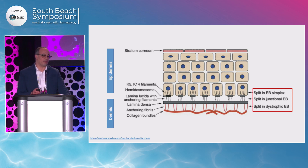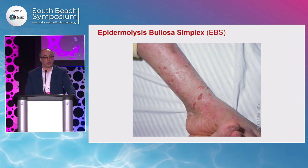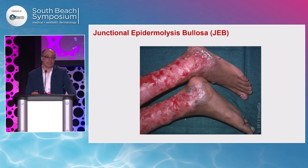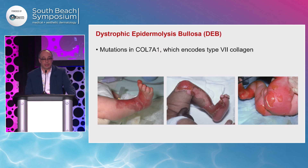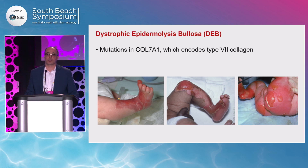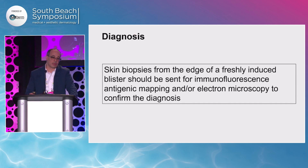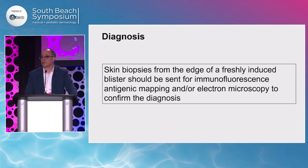Here's a depiction — you can see at the right side the levels of the split we talked about, with representative photos for each EB type: EB simplex, junctional EB, and dystrophic EB. Dystrophic EB is caused by a mutation in COL7A1, which encodes type 7 collagen — the chief anchoring fibril that connects the epidermis with the dermis. For diagnosis, a skin biopsy is taken from the edge of a freshly induced blister and sent for immunofluorescence testing to confirm the subtype of EB.